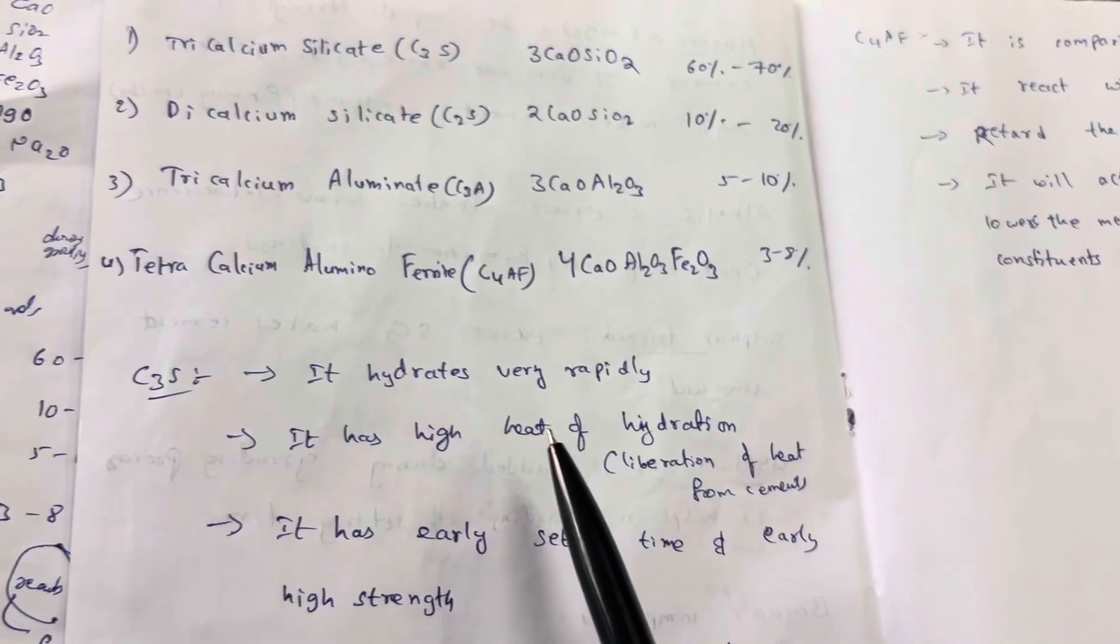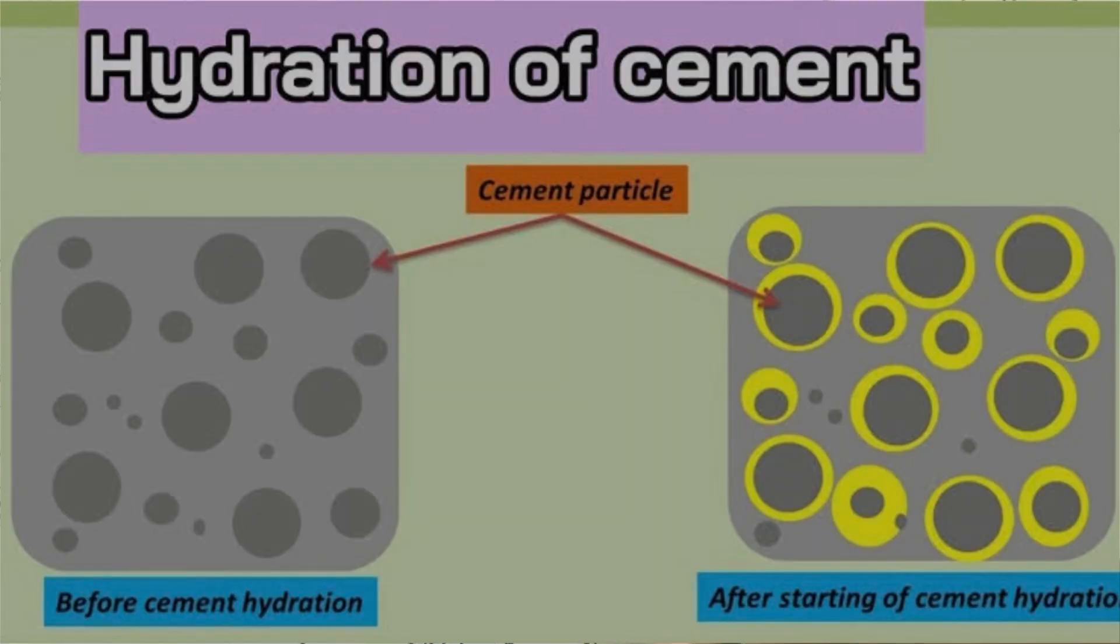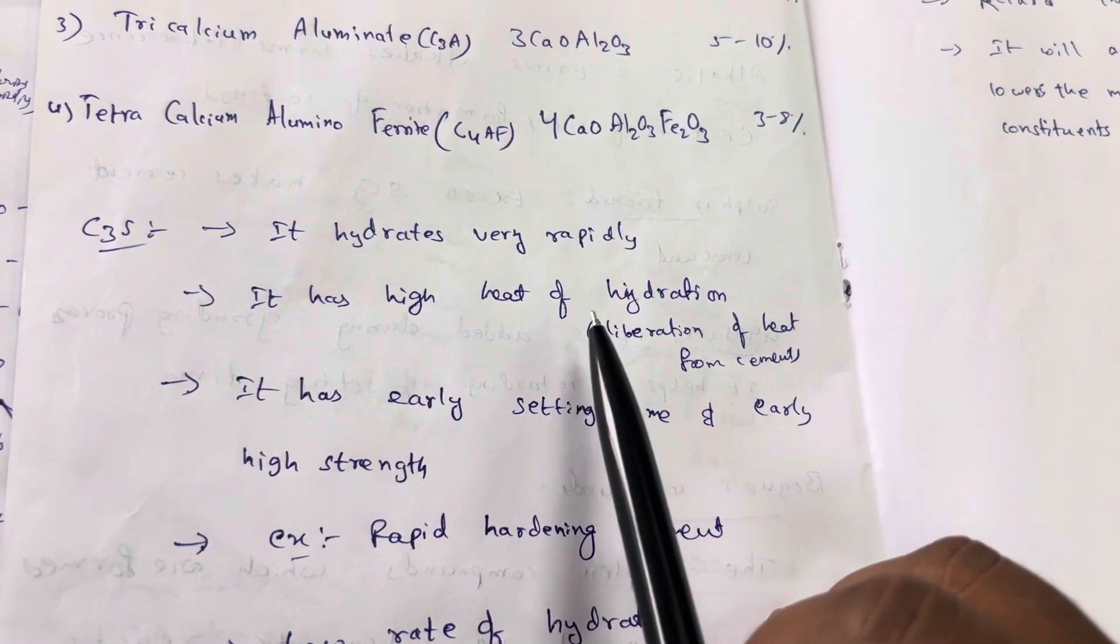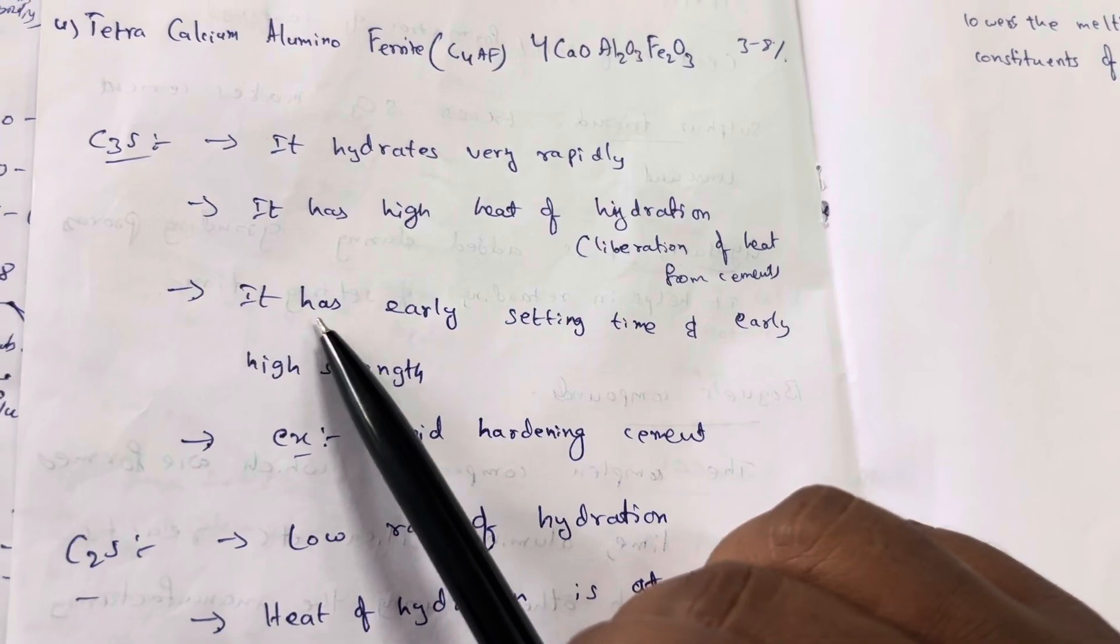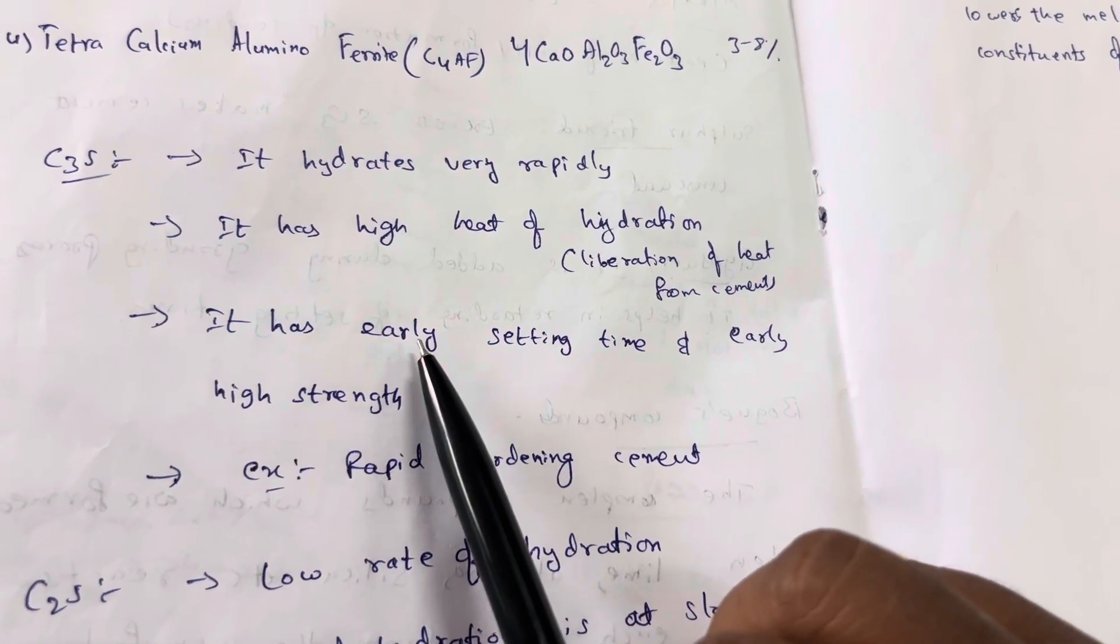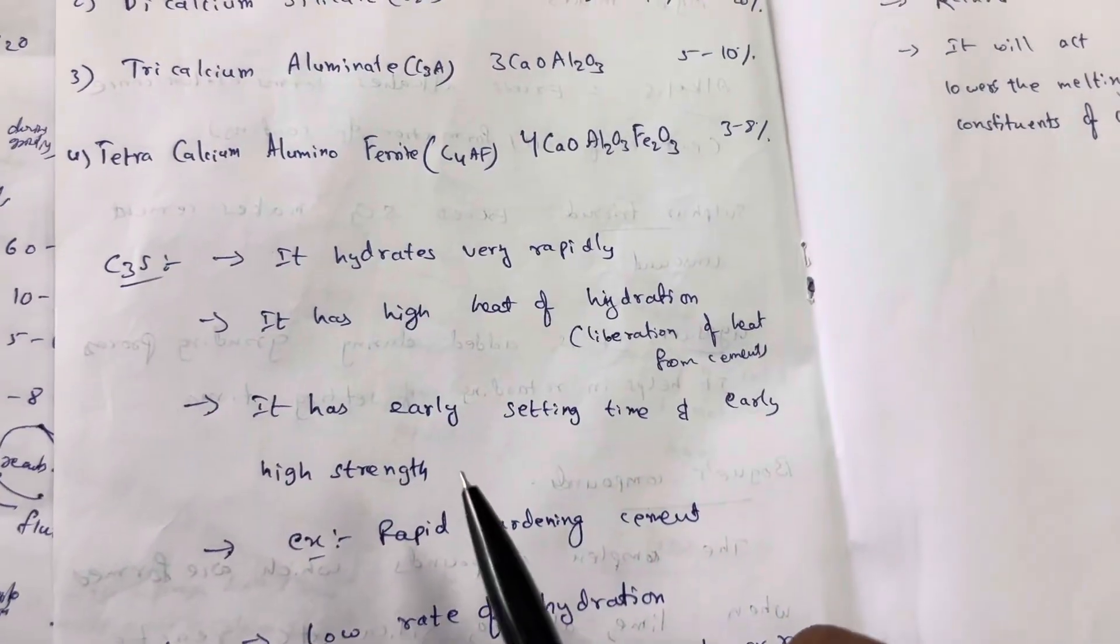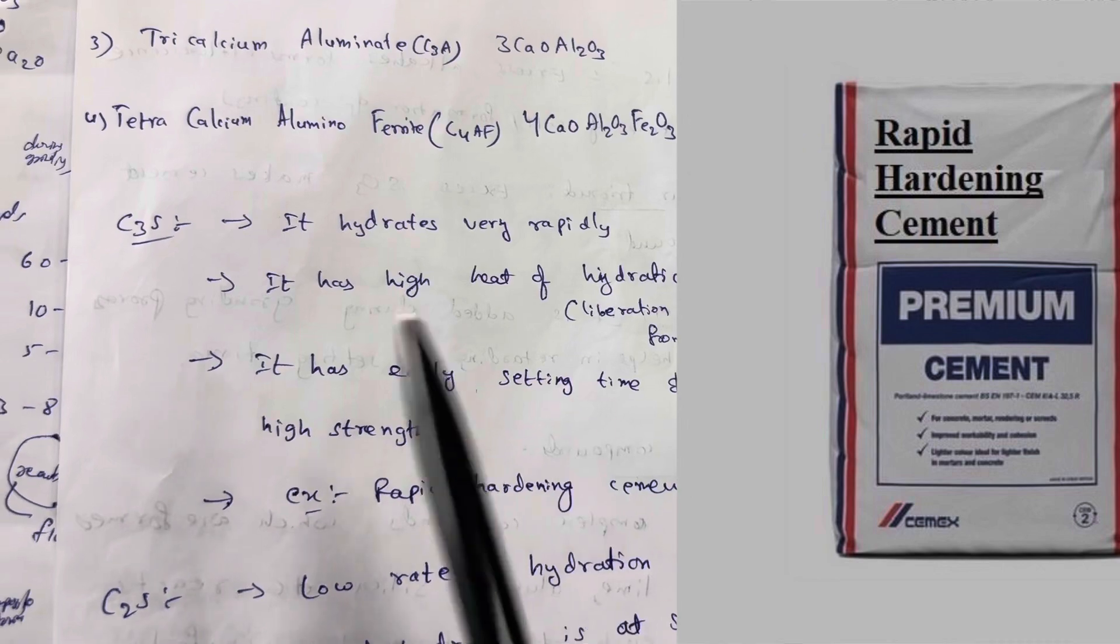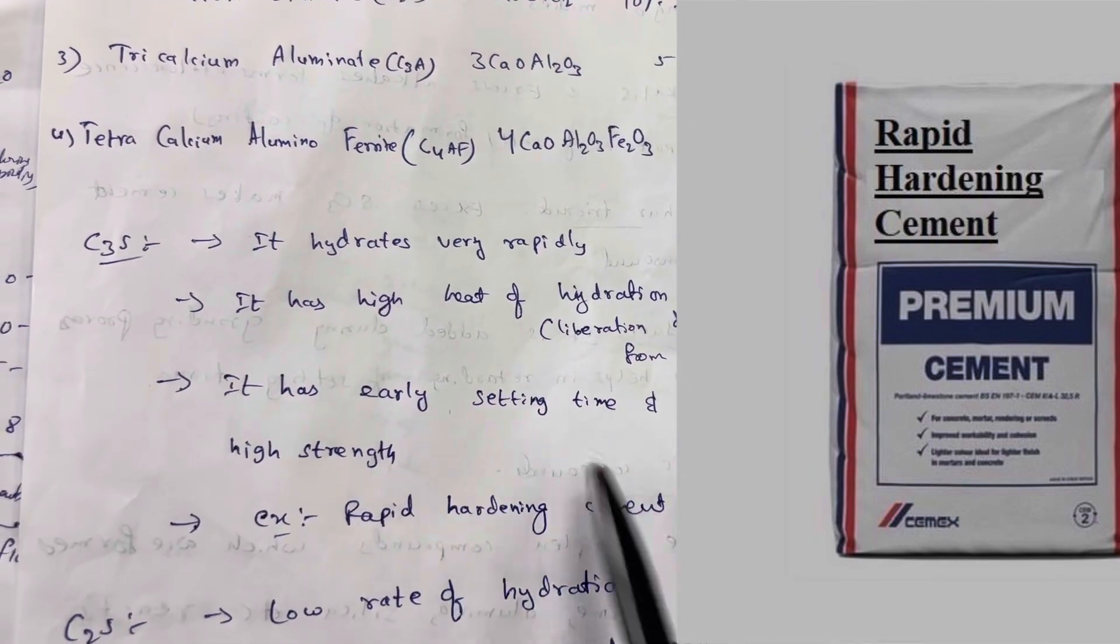First, C3S, tricalcium silicate. It hydrates very rapidly. Hydration is very fast. It has high heat of hydration, meaning high liberation of heat from cement. It has early setting time and early high strength. An example of this is rapid hardening cement. If C3S percentage is very high in cement, it will be rapid hardening cement.